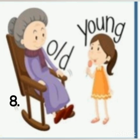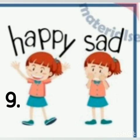Number eight is young and the opposite of young is old. You can see in the picture the grandma is old and the girl is young — the opposite of old is young and the opposite of young is old. Number nine is happy and the opposite of happy is sad. You can see in the picture there are two girls — one is very excited and laughing, so she is happy, but the other one seems to be sad.